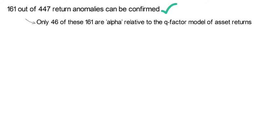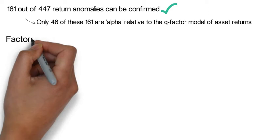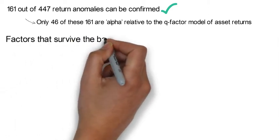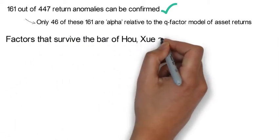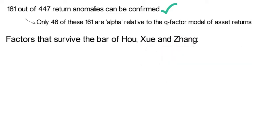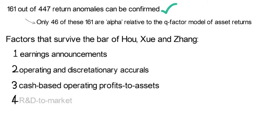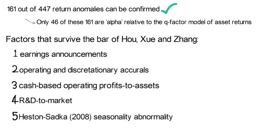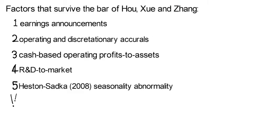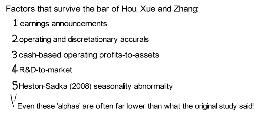Rather than listing which of the 447 factor anomalies do not exist, I state the ones that survive the bar of Hou, Xu, and Zhang. These are earnings announcements, operating and discretionary accruals, cash-based operating profits to assets, research and development to market, and seasonality abnormalities as in Heston-Sadka 2008. Yet the authors state that even these alphas are often far lower than what the original studies found.